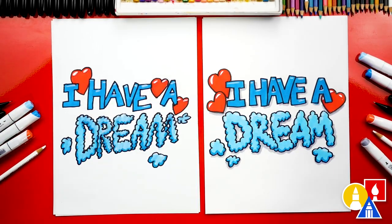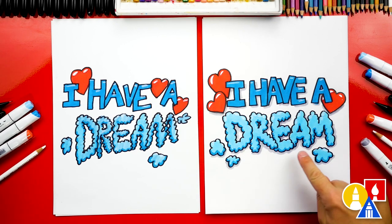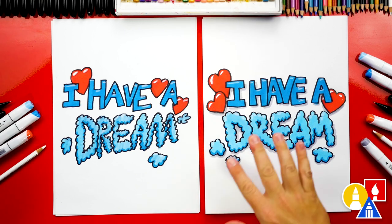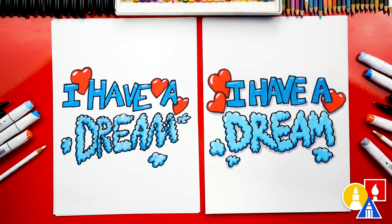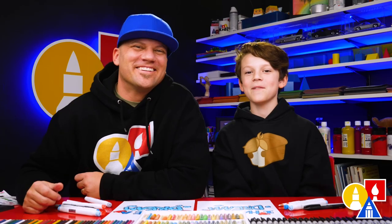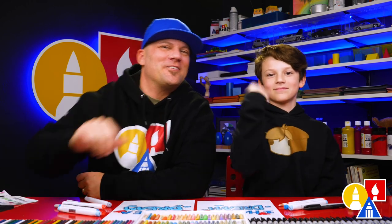We did it! We finished drawing and coloring the words 'I have a dream' and it turned out awesome. I also added the shadow to the word dream, but you can leave that shadow off to keep the lesson a lot easier. You can also color your drawing any way you want — you could change the colors, maybe rainbow colors, or you could even just color the whole thing pink. You could also add more things to the background, or even draw Martin Luther King in the background. We hope you had a lot of fun drawing with us, and we'll see you later, art friends!